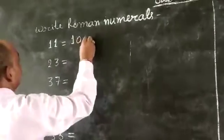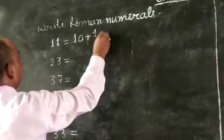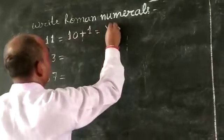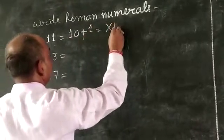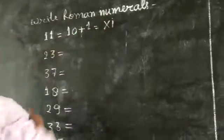11 equals 10 plus 1. Roman numeral of 10 is X and 1 is I, so XI.